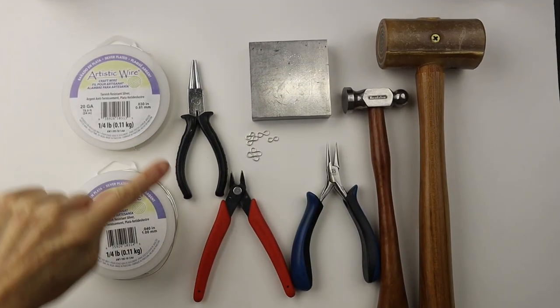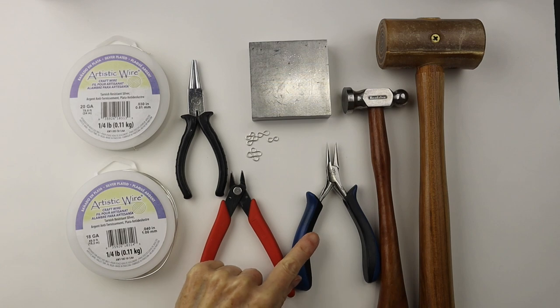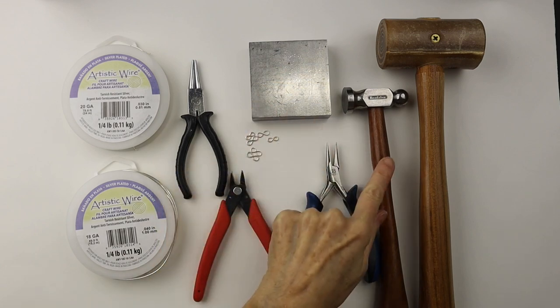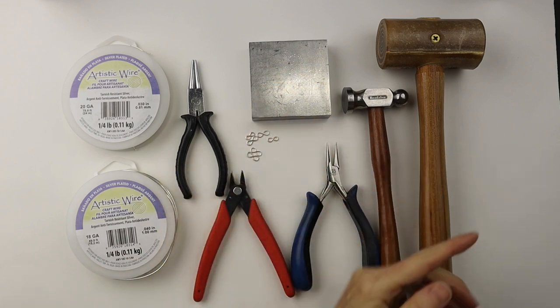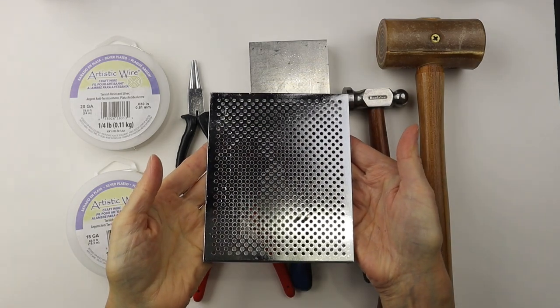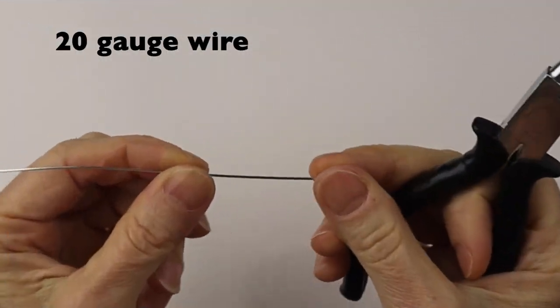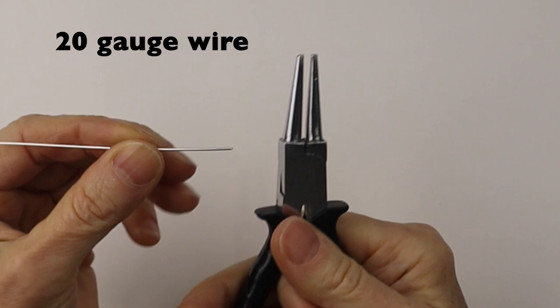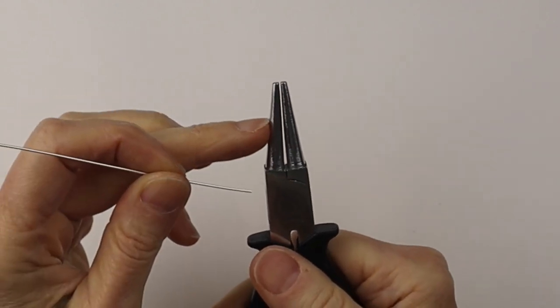For this project you're going to use 20 or 18 gauge wire, round pliers, flush cutters, and flat pliers. I have a steel block and a couple of hammers, and I also have the Artistic Wire Deluxe Jig Kit.